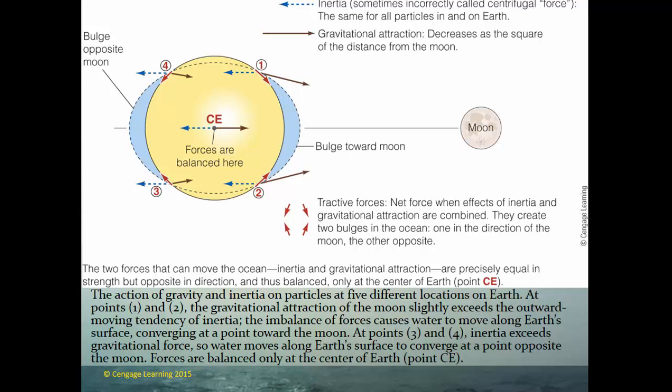At different points on the earth, there are different forces: forces created by inertia, forces created by gravity, and attractive forces that all sort of balance together. The two forces that move the ocean — inertia from our motion around the earth-moon system, and the gravitational attraction of the moon — are precisely equal in strength but opposite in direction. They only really balance at the center of the earth.